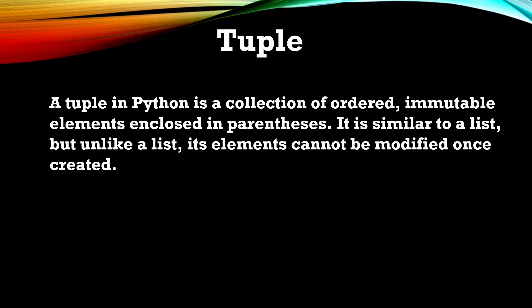Welcome back to the Python for Beginners series — this is video number 21. In this video we are going to learn about tuples. A tuple in Python is a data type that is a collection of ordered, immutable elements enclosed in parentheses. It is similar to a list, but unlike a list its elements cannot be modified once created. Tuples are immutable and lists are mutable — we cannot change the elements of a tuple, but we can change elements in a list.